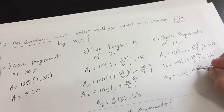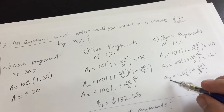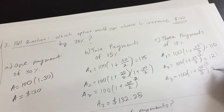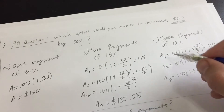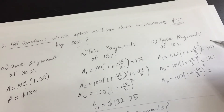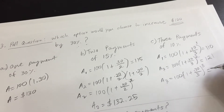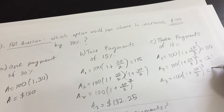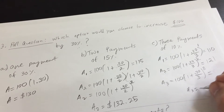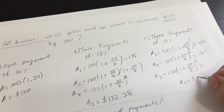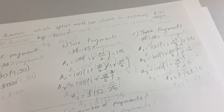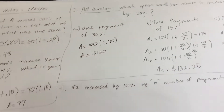Notice the nice pattern: 10% comes from 30% divided by 3. For three payments we multiply by (1.10) three times — the exponent corresponds to the number of compounded payments. For two payments it was squared, for one payment it was to the first power. Using the calculator, the three-payment result is $133.10.